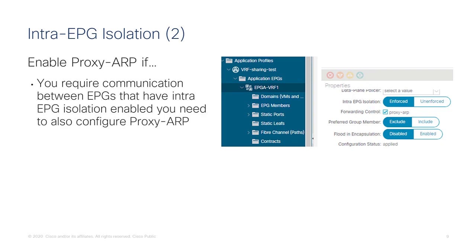If you need two isolated EPGs to communicate with each other — specifically two isolated EPGs talking to each other — you also need to enable proxy ARP, as shown here. Note: if you need a regular EPG to talk to an isolated EPG, proxy ARP is not required; it is only required when two isolated EPGs need to communicate with each other.